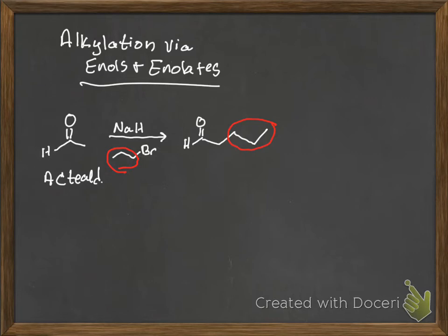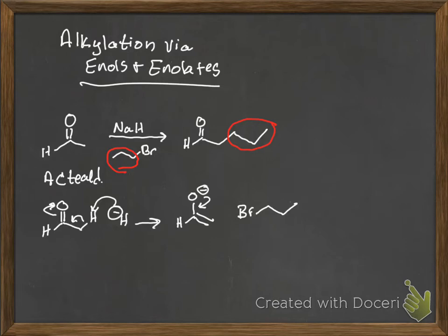All right. Now, let's just show the mechanism for that. The hydride is going to yank the proton off of the enolate. Send it up there. So you've got this. Reform the pi bond. Nucleophilic attack on that carbon. Break open the carbon-bromine bond, and you get to there.